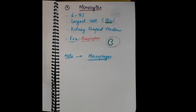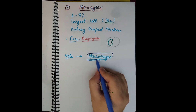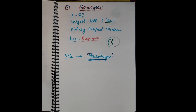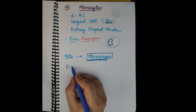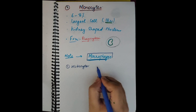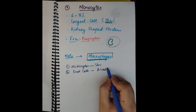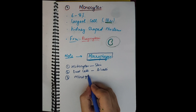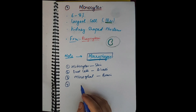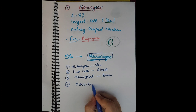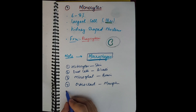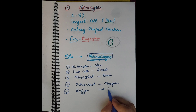One very important feature of monocytes is that when they leave the bloodstream, they form macrophages. Different types of macrophages include histiocytes in the skin, dust cells in the alveoli, microglial cells in the brain, osteoclasts, and Kupffer cells in the liver. These macrophages are simply monocytes that have exited the blood vessels and taken up residence in various tissues.